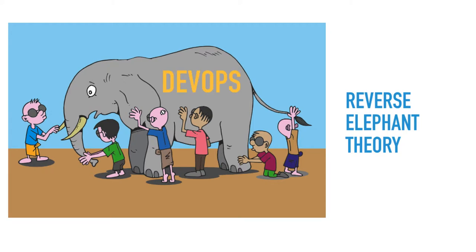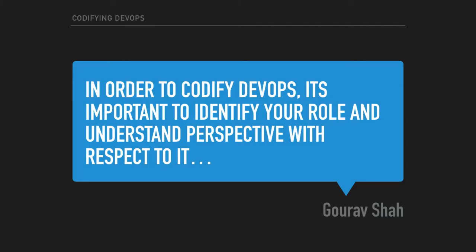What I recommend you do with DevOps is take a reverse elephant theory approach. Instead of looking at every single aspect — culture, tools, practices — you look at DevOps from the perspective most relevant to you. I'm going to give you that perspective based on who you are in your organization, because everybody needs to codify DevOps differently.